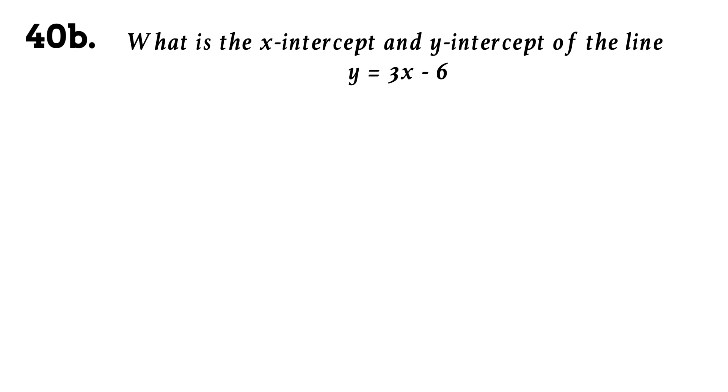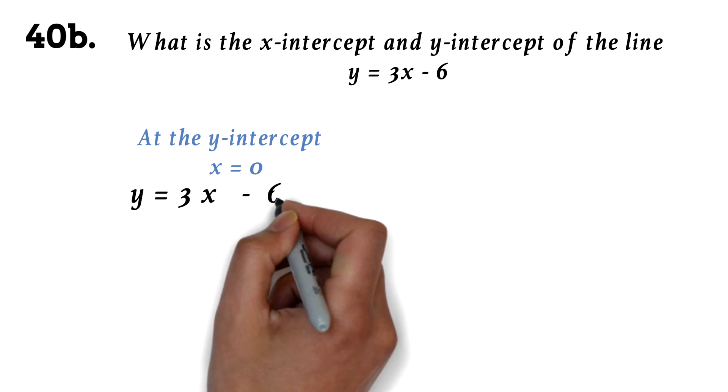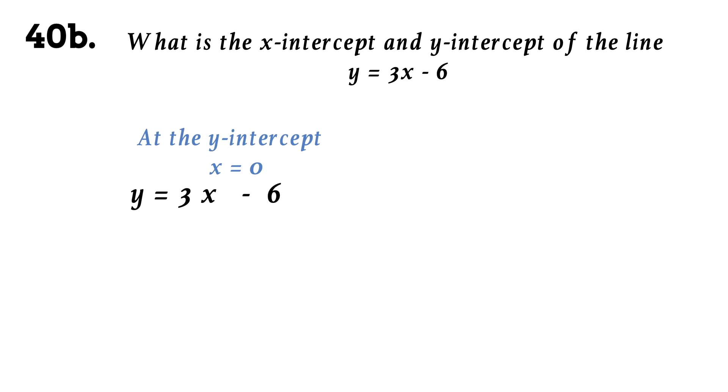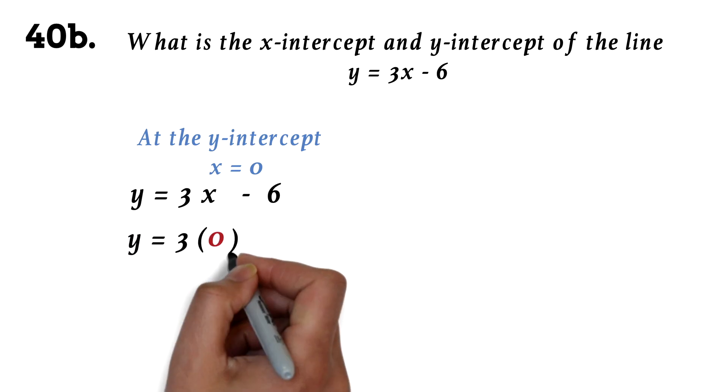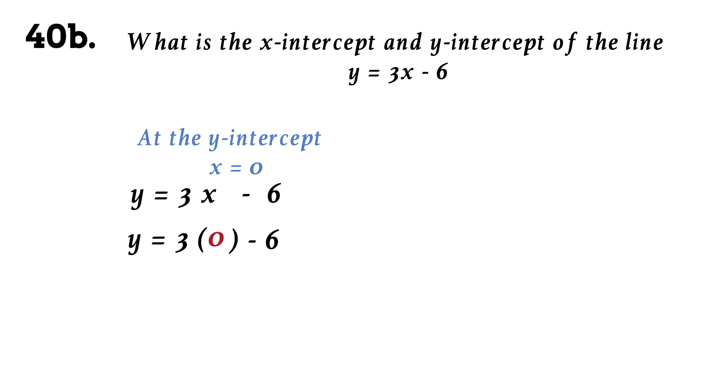What you need to know here is that at the y-intercept, the value of x is 0. So we can put 0 in place of x and find y. We have y equals 3 times 0 minus 6. This will give us negative 6 as our y-intercept.